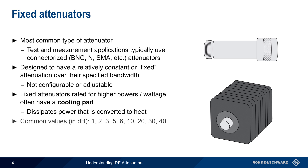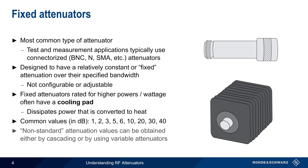Fixed attenuators are made with single integer dB attenuation values, such as 1, 3, or 5 dB, with higher attenuation values usually being available in 10 dB increments. Non-standard attenuation values, such as 27 dB, can be obtained by cascading multiple attenuators, or by using variable attenuators.